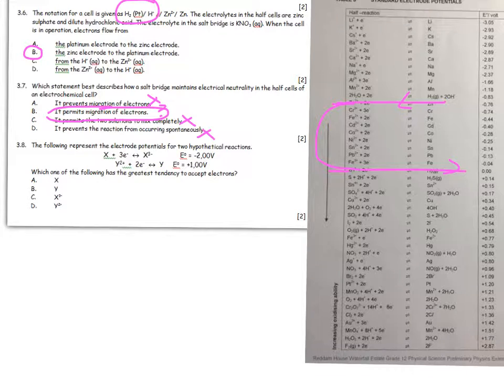The following represent electrode potentials for two hypothetical reactions. Which has the greatest tendency to accept electrons? The ones that accept electrons are lower down on the table—the most positive. We're interested in the Y reaction, and the Y²⁺ does the accepting of electrons, so it's D.